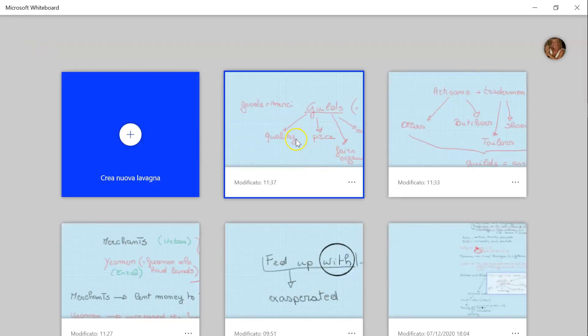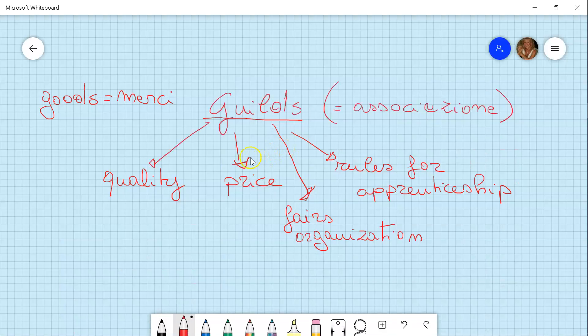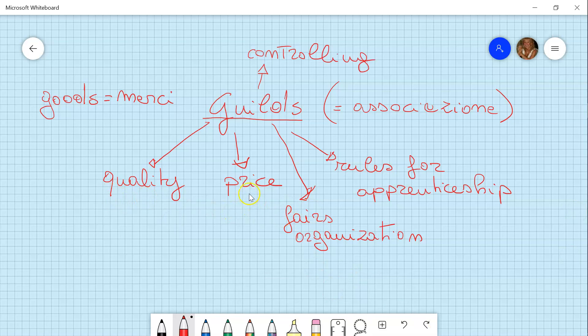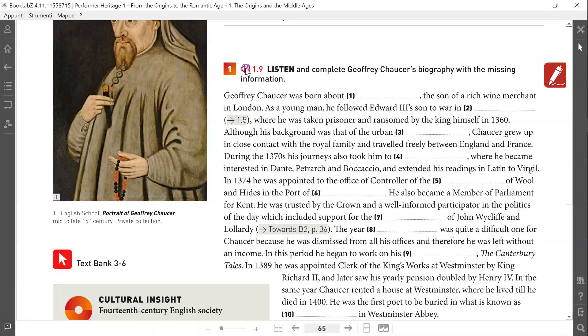And the last thing is what was the role of the guilds. The guilds, what did they do - this association, they controlled the quality of the goods. The guilds' main activity was that of controlling quality of goods, the price of goods, the rules - they established the rules for apprenticeship. And they organized the fairs. That's all, thank you.